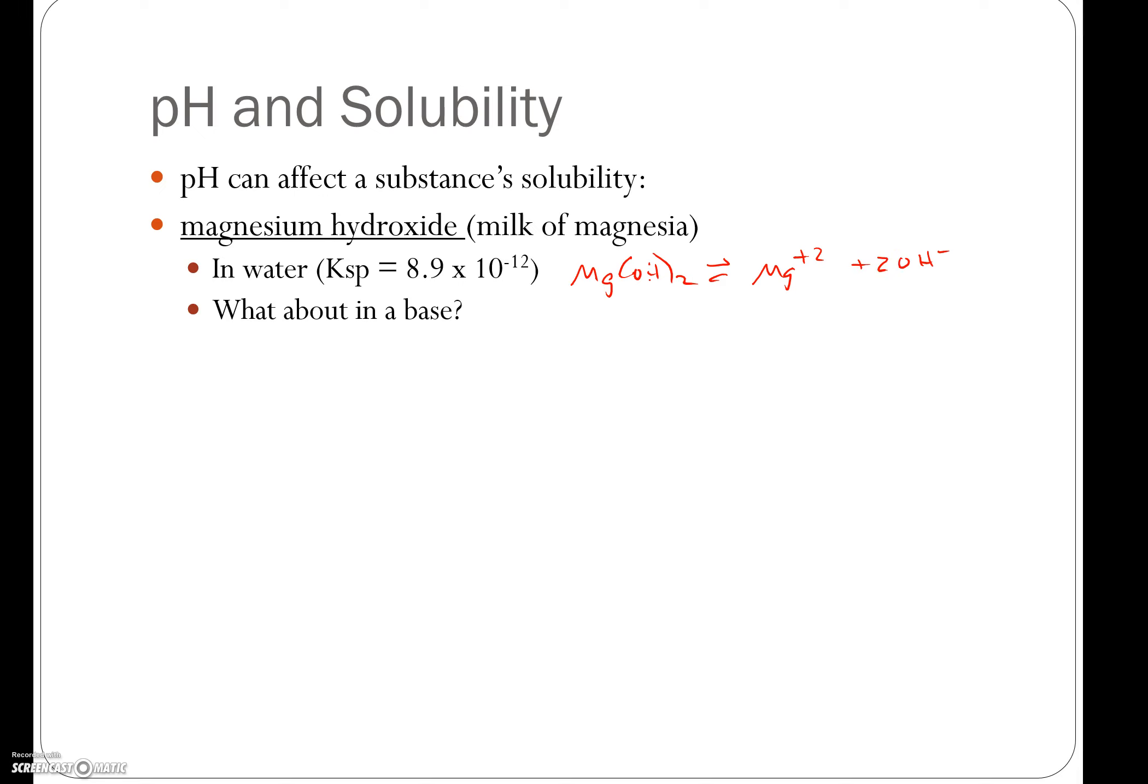If we were to add a base to this solution, we're increasing the hydroxide ion concentration, which would shift the equilibrium towards the left and decrease the solubility of the magnesium hydroxide.